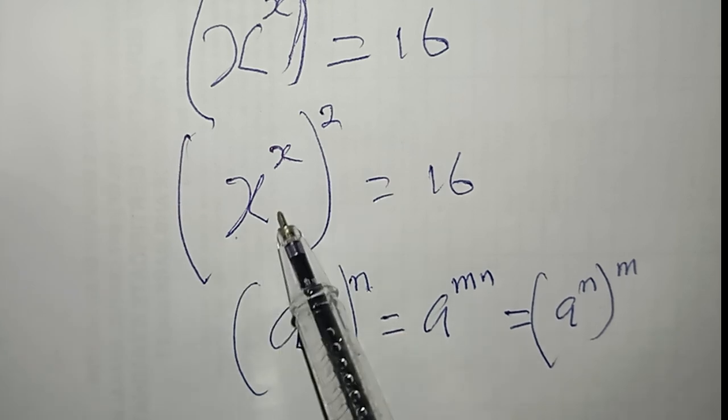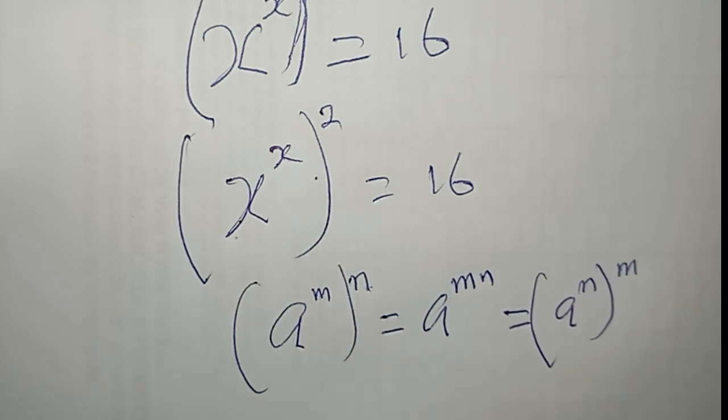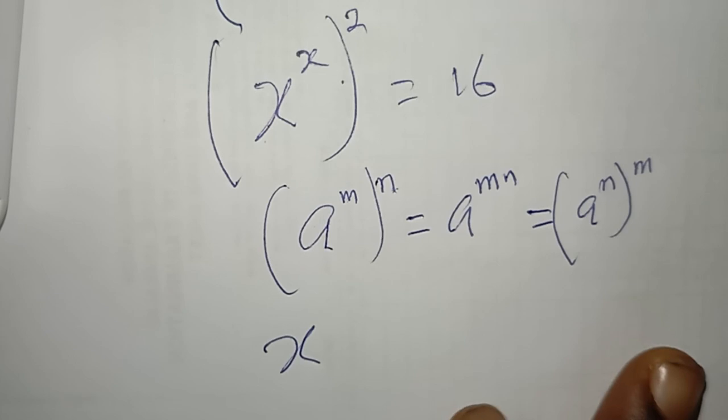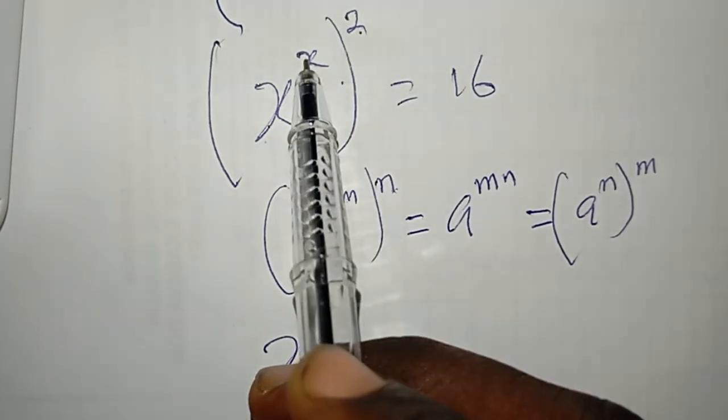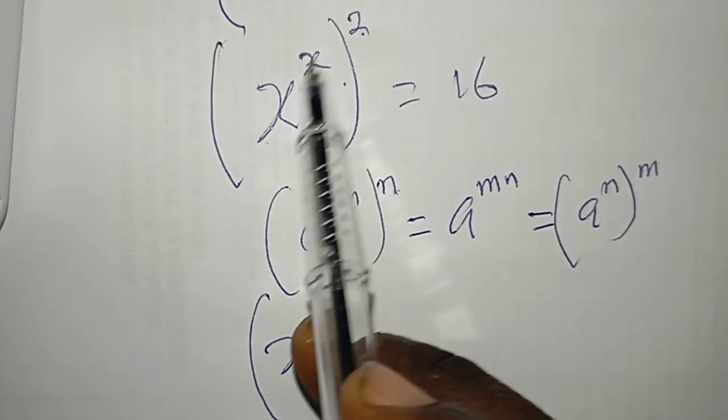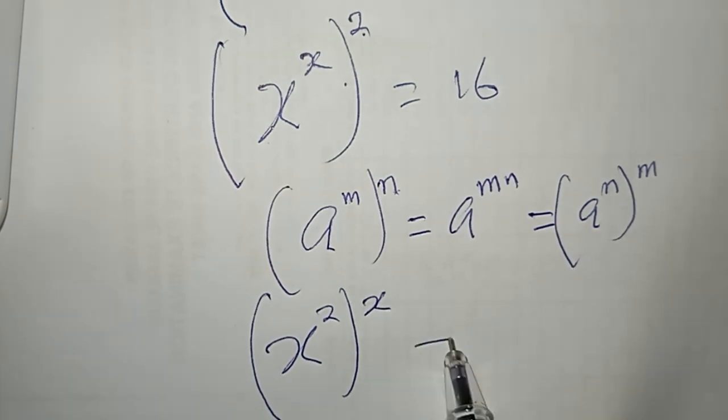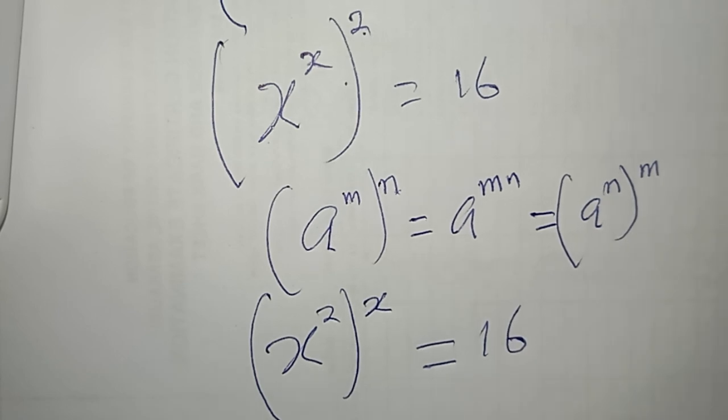So that is what I'm going to apply here. If I do that, what I'm going to be having here is x power 2, and then all raised to power x. So I'm going to bring in this 2 to get x^2, then all raised to power x. Of course, it's equal to 16.